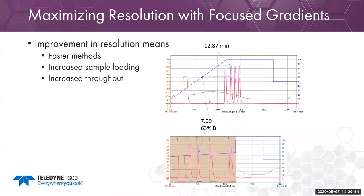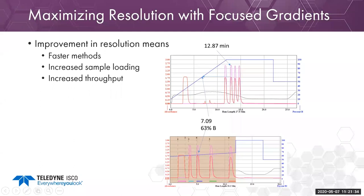Here's an example showing how focusing a gradient over a certain range improves resolution, using a series of parabens. Running from 10 to 100%, we can see initial DMSO peak, some impurities, and four parabens coming through with barely baseline resolution — peaks three and four kind of co-elute. But focusing the gradient from 67 to 77% provides minutes of baseline separation between compounds, allowing us to increase compound loading to maximize throughput.